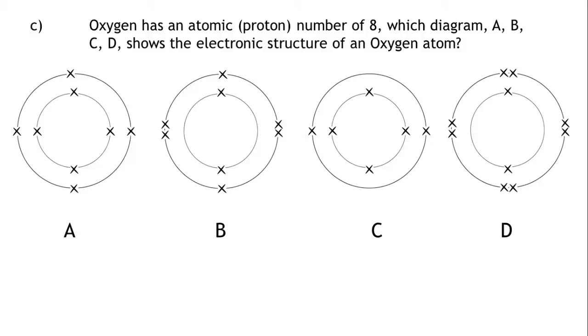Let's write down what we know. The atomic number tells us how many protons are in an atom. The number of protons is equal to the number of electrons. This means we should see eight electrons in the correct diagram. We can therefore eliminate diagram C as it only has six electrons. We can also eliminate diagram D as it has ten electrons.